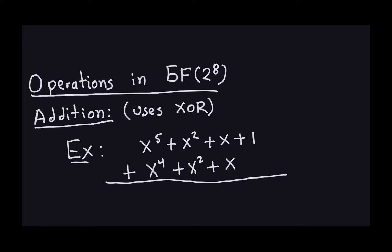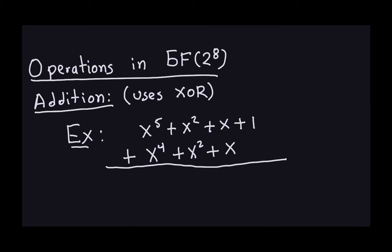You add them the same way you add polynomials — you add the coefficients — but instead of normal addition where one plus one equals two, remember that with XOR, one plus one is zero and one plus zero is one. So looking at this polynomial, the largest power is x to the fifth. There's no other x to the fifth to combine with, so I just write down x to the fifth. The next power is x to the fourth, and there's only one of those, so I get x to the fourth.